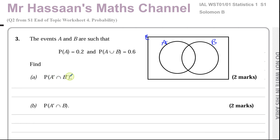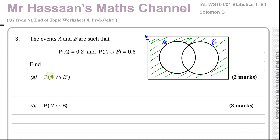We want to find the probability of A complement intersection B complement. That means it must be outside of A, and also — because it's intersection — it must be outside of B as well. So it's basically everything outside of both circles. There's another more commonly used way to express this area: the probability of A union B complement. Those two mean the same thing exactly.